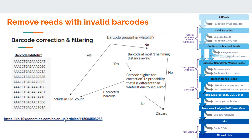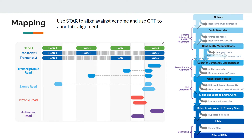After barcode correction and filtering, all reads with invalid barcodes are discarded and we have valid barcodes. In the next step, Cell Ranger performs reference mapping — it aligns all reads against the reference genome. Since transcriptomic splicing has occurred, we need to use a splice-aware aligner. Cell Ranger uses STAR, a splice-aware aligner that understands splicing events — that is, exon-intron boundaries.